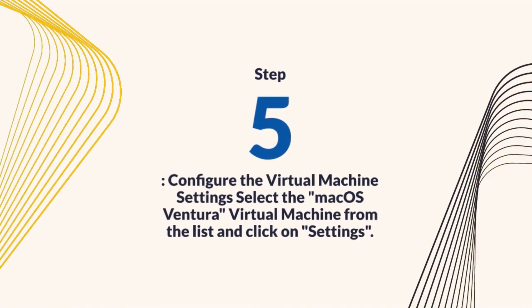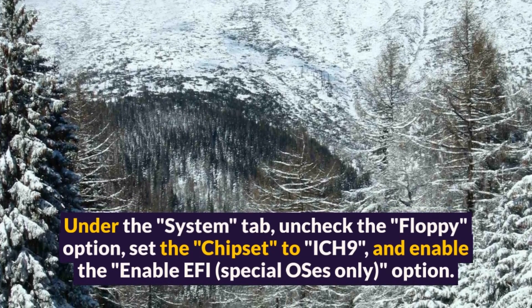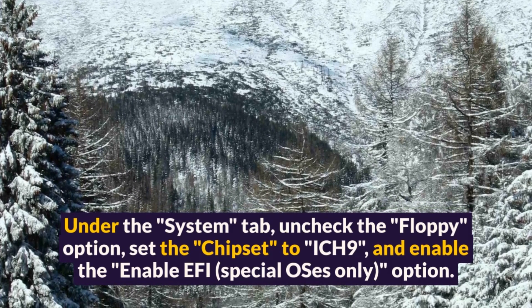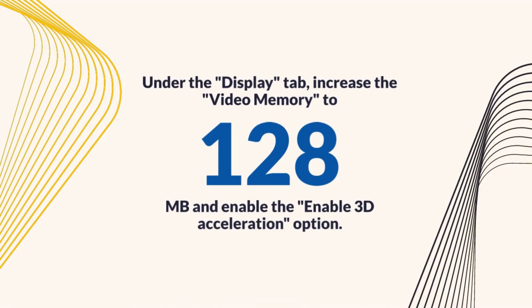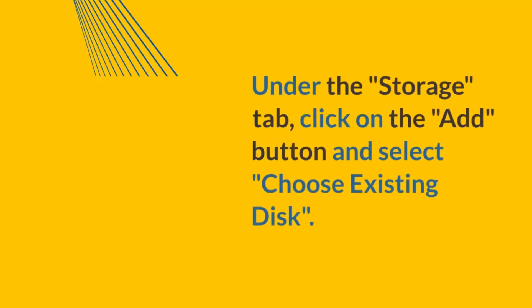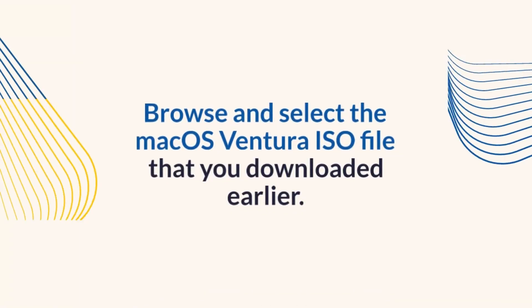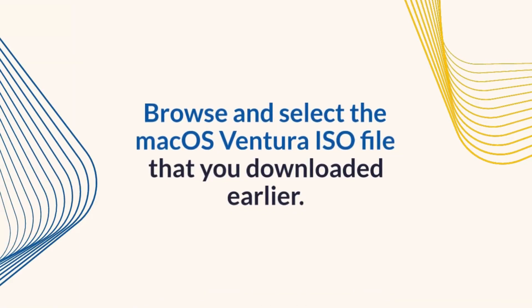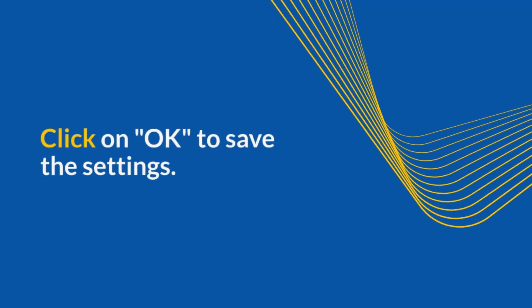Step 5: Configure the virtual machine settings. Select the macOS Ventura virtual machine from the list and click on Settings. Under the System tab, uncheck the Floppy option, set the chipset to ICH9, and enable the "Enable EFI (Special OSes Only)" option. Under the Display tab, increase the video memory to 128MB and enable the Enable 3D Acceleration option. Under the Storage tab, click on the Add button, select Choose Existing Disk, browse and select the macOS Ventura ISO file that you downloaded earlier. Click on OK to save the settings.